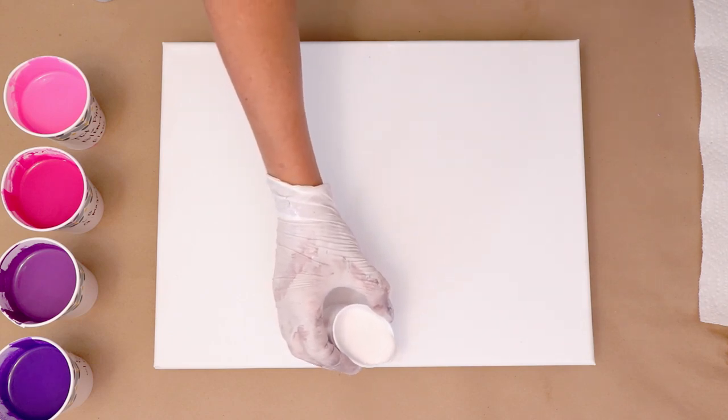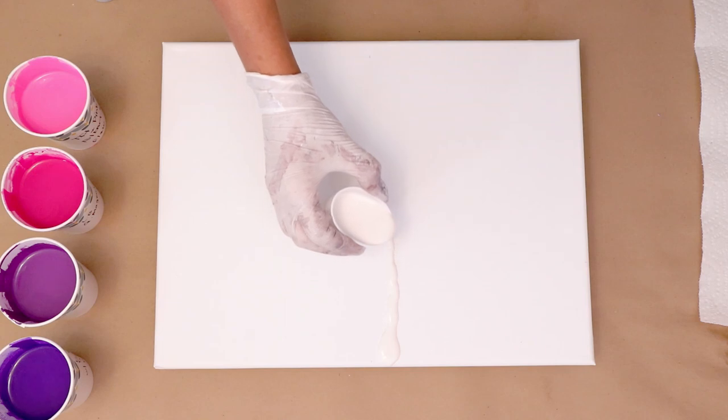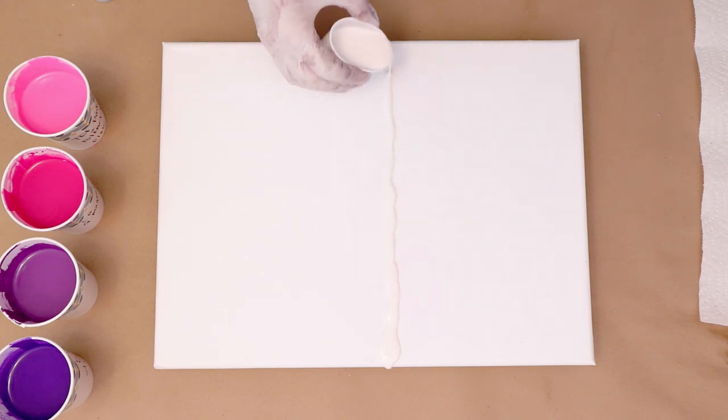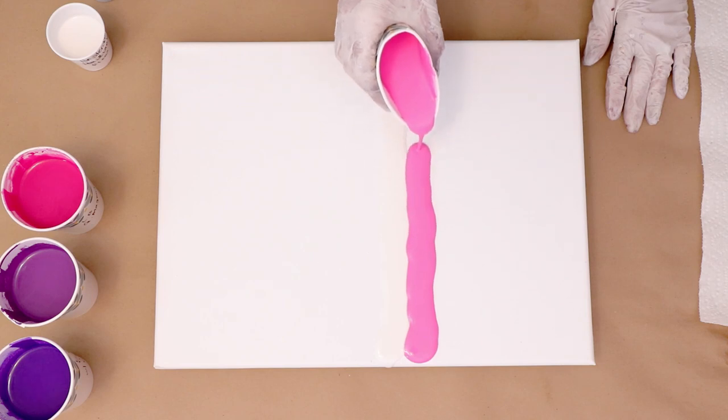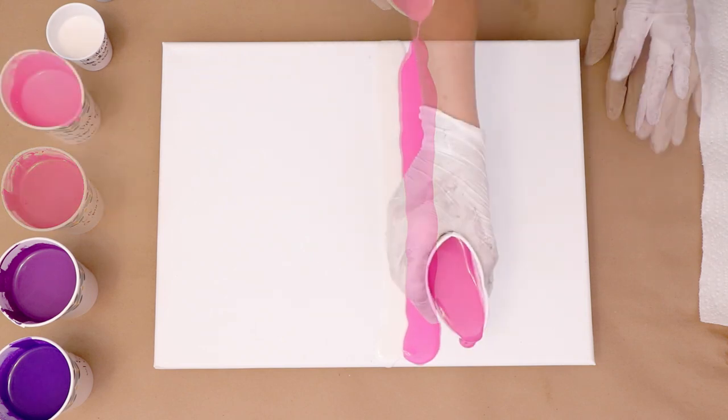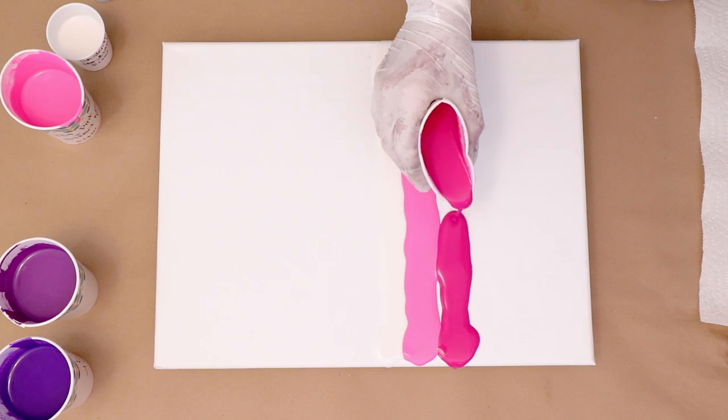And this white that you see is actually a pearl paint. It is from Amsterdam and is pearl purple. All my paints are mixed with Flotrol and water only, so they're all mixed the same.